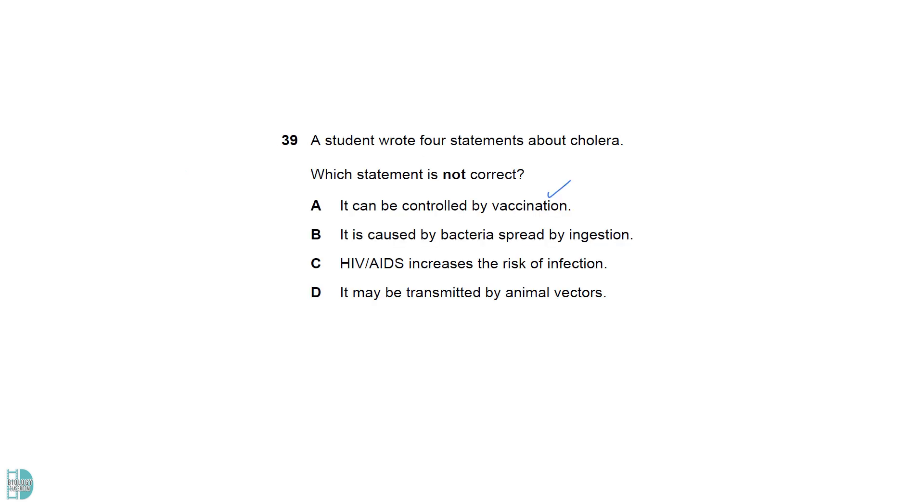Cholera vaccine exists and is a way to control the disease. Since it is a waterborne or foodborne disease, B is a correct statement. C is true, as HIV can weaken a person's immune system and increase the risk of other infectious diseases. D is wrong, since cholera is not a vector-borne disease.